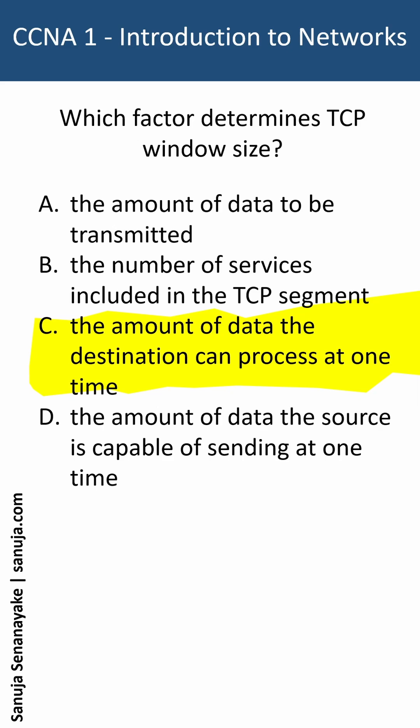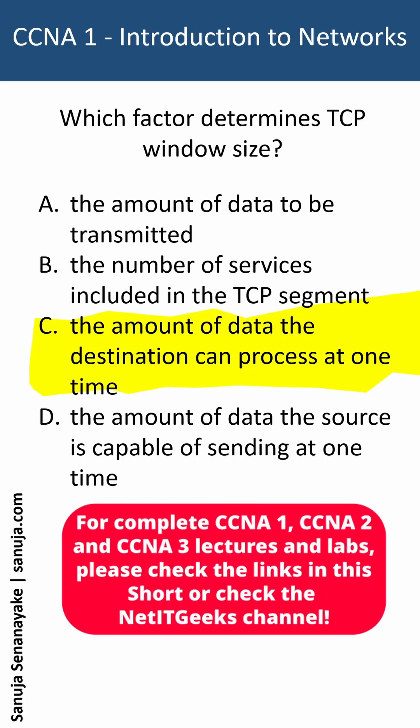Remember, the window is the number of bytes that the sender will send prior to expecting an acknowledgement from the destination device. The initial window is agreed upon during the session startup via the three-way handshake between the source and destination. Therefore, it is determined by how much data the destination device of a TCP session is able to accept and process at one time.